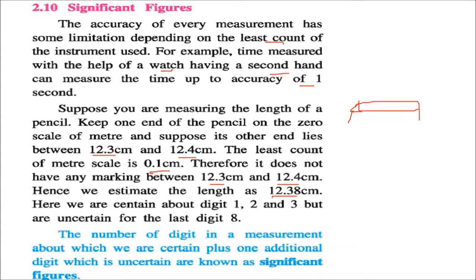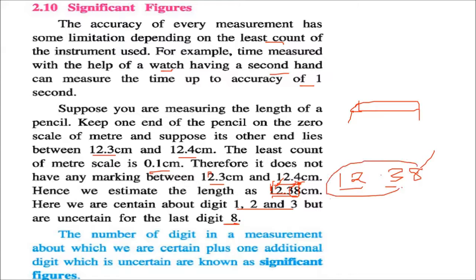So we have certain digits: 1, 2, 3, and 8. In this, 1, 2, 3 are precise, but we are not sure about 8. The number of digits in a measurement about which we are certain — 1, 2, 3 — plus one additional digit which is uncertain, as in this example. So combining them, 1, 2, 3, 8 — there are 4 significant figures.